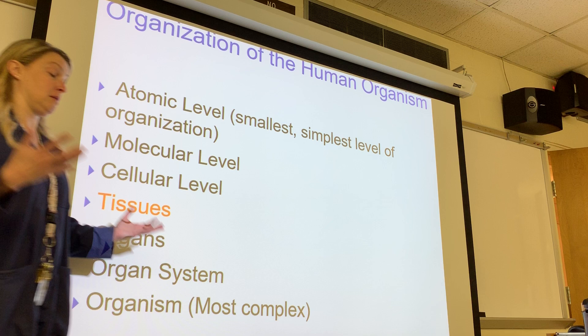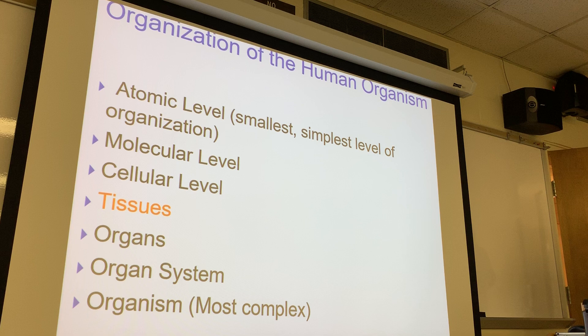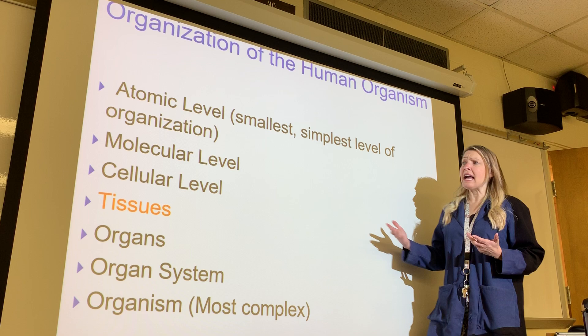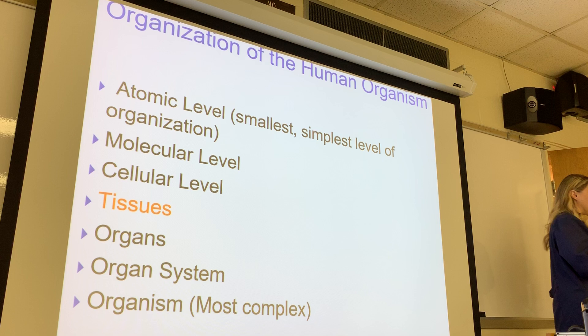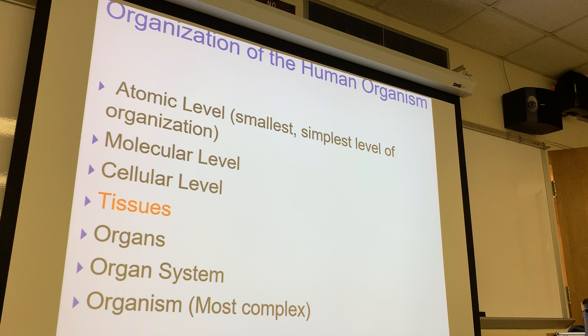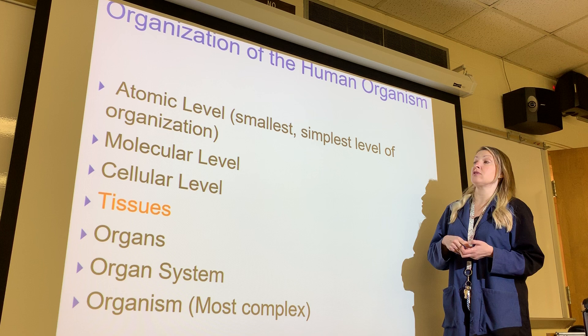So we have two hydrogen atoms and one oxygen atom bonded together to form H2O — atoms form molecules. We also have larger molecules: carbohydrates like glucose, which are our sugars; proteins, which are big molecules too; lipids; and DNA and RNA, which are nucleic acids. All of these molecules are made up of atoms.